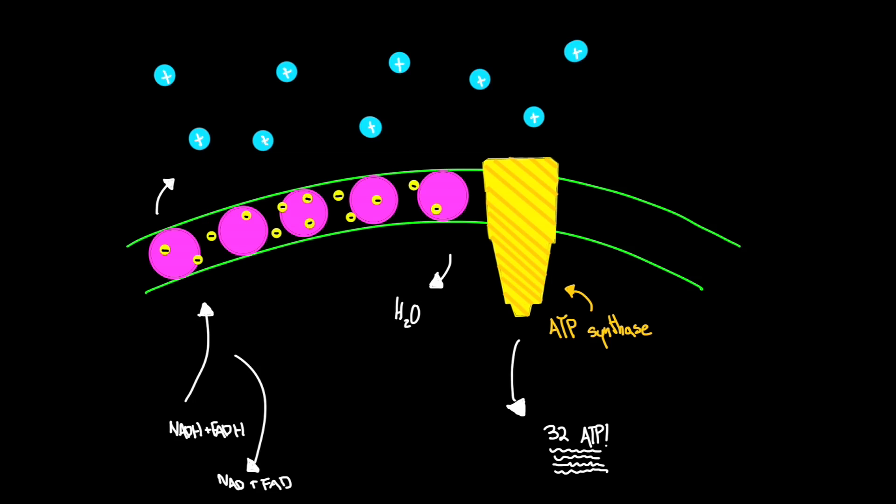The electrons are transported across special electron conductors and eventually come out at the end, combined with oxygen and some other things, and become water.